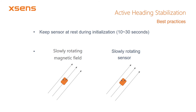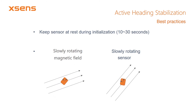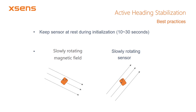When activating AHS, there are several considerations to keep in mind. First, during initialization of the sensor, AHS requires the MTI to be motionless for a short period of time. Depending on your configuration, this initialization process may take between 10 and 30 seconds. In addition, there is one known situation where AHS may have a detrimental effect on heading estimation performance: when either the MTI or the magnetic field rotates very slowly, it will be difficult to distinguish between the two from a sensor point of view, which may result in additional heading tracking errors.